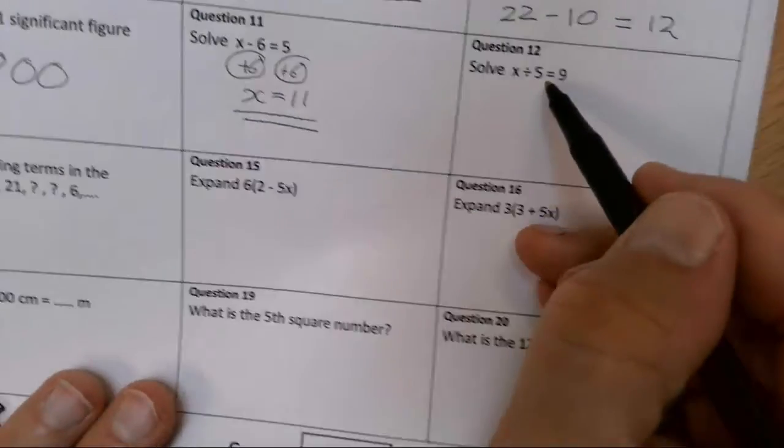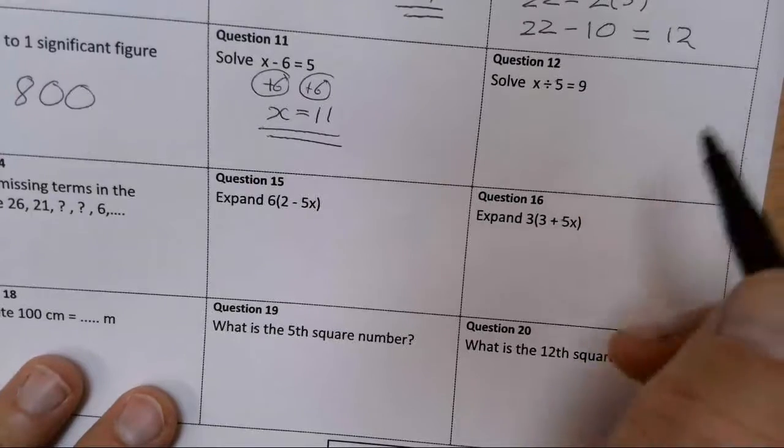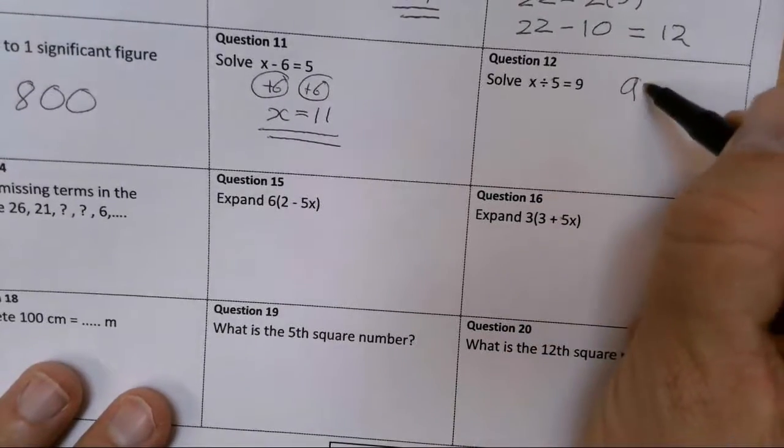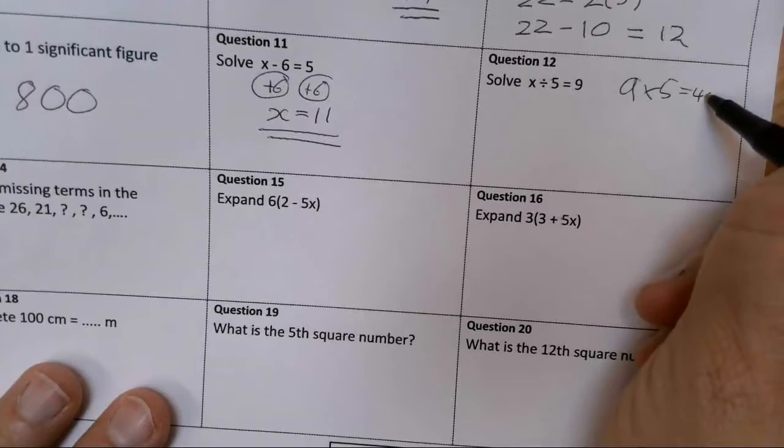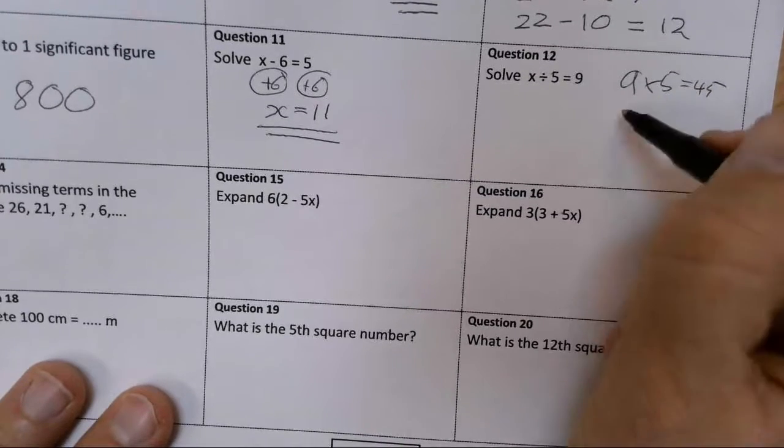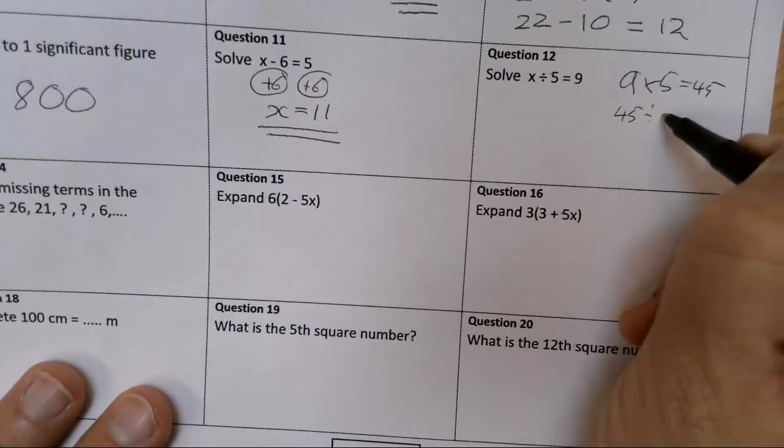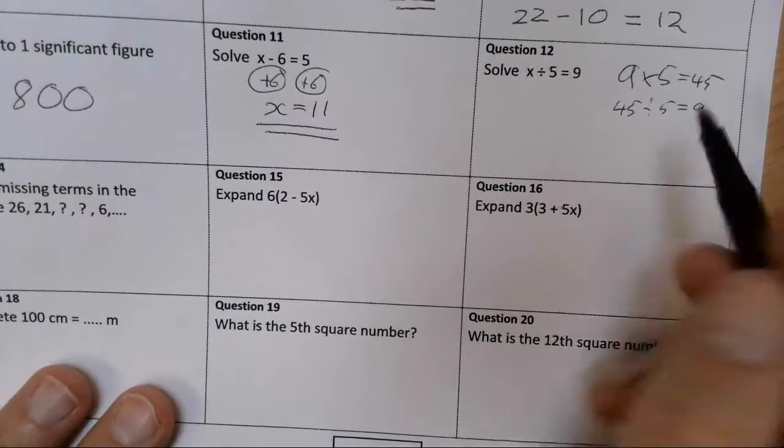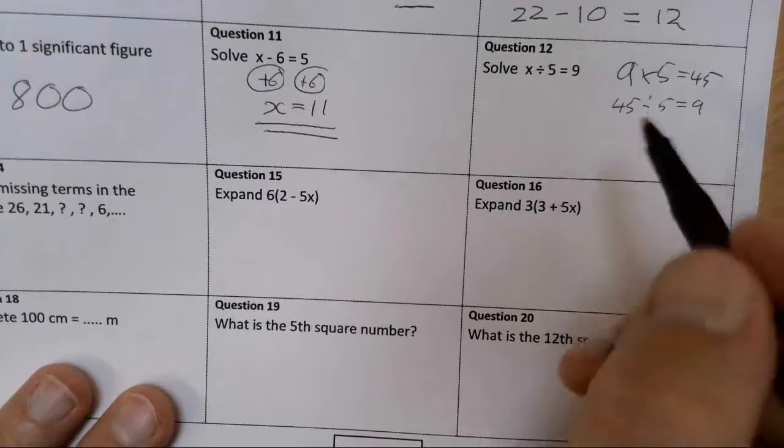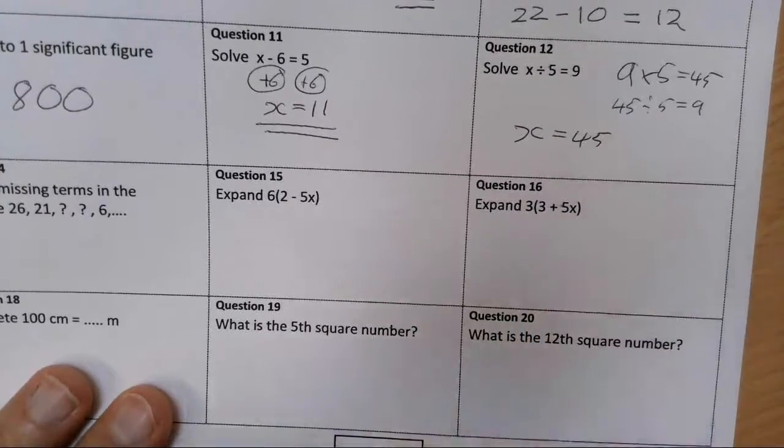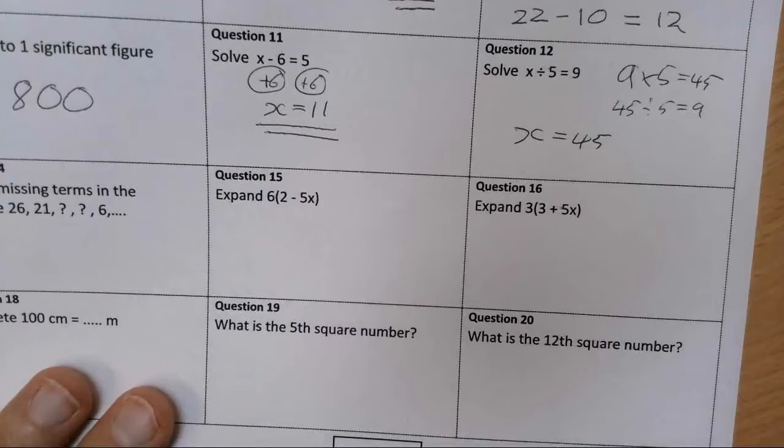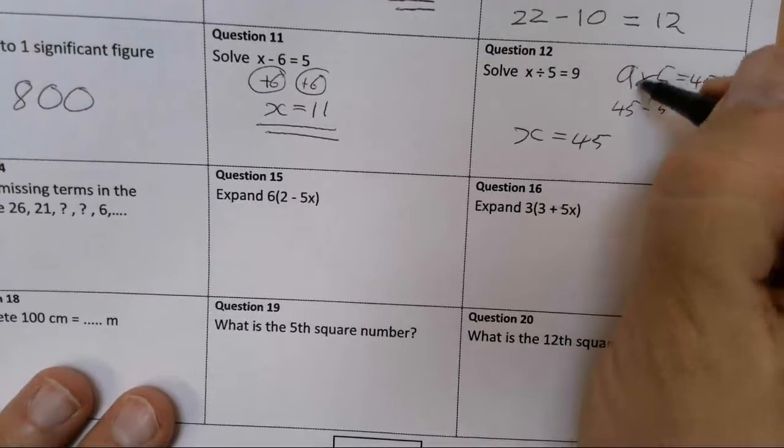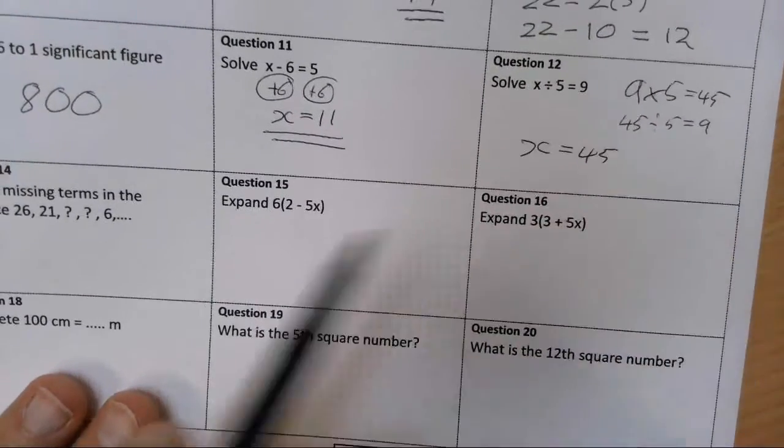A number divided by 5 equals 9, so you just need your times table facts. I know that 9 times 5 is 45, so therefore 45 divided by 5 would be 9, and 45 divided by 9 would be 5, but this one is 45 divided by 5, so X must be 45. You need to use your times tables and the related division facts.